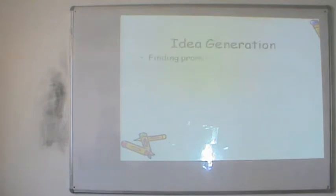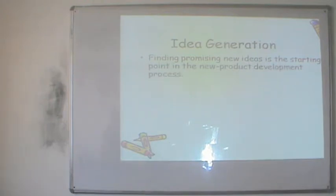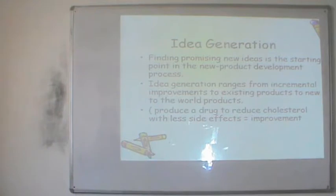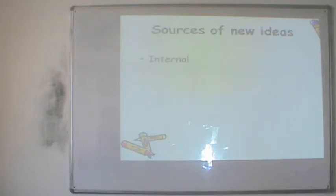The first step is idea generation — the company sets out to find promising new ideas to start a new business or come up with a new product that consumers will accept with open arms. Idea generation ranges from incremental improvements to existing products to entirely new products to the world. For example, a company may produce a drug to reduce cholesterol with fewer side effects — that is an improvement — or a drug that cures AIDS, which would be a new product to the world.